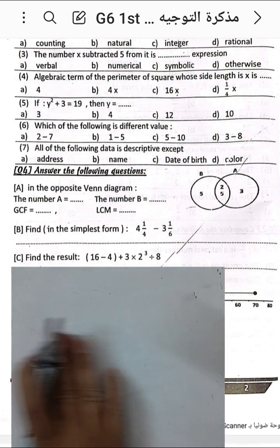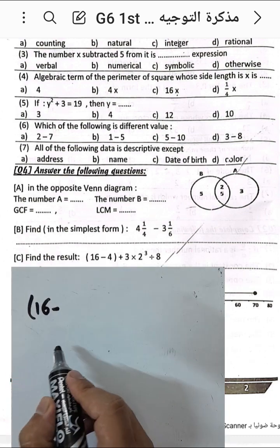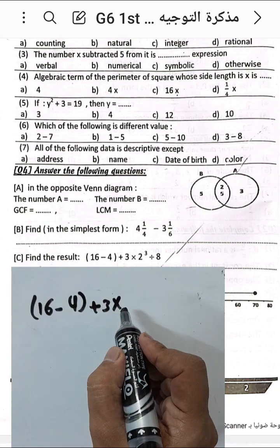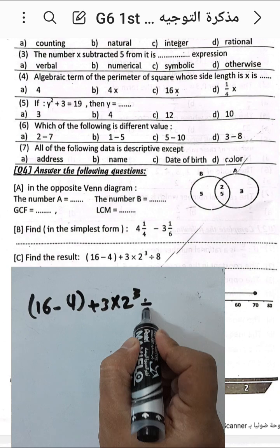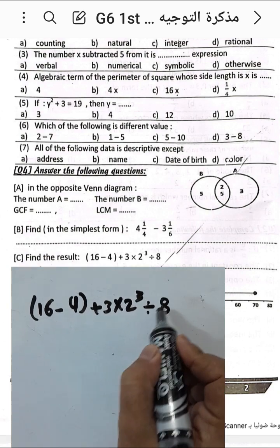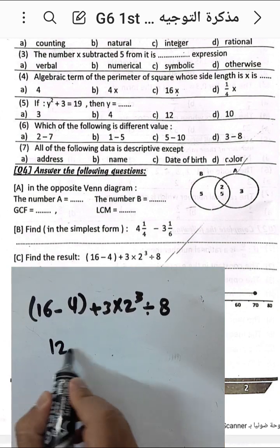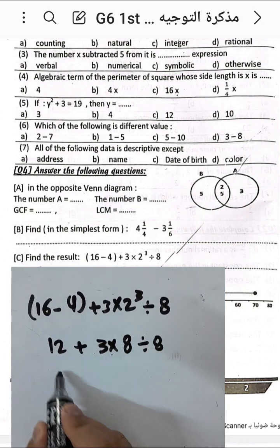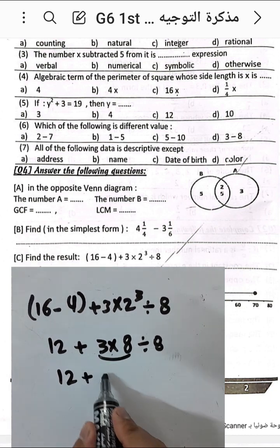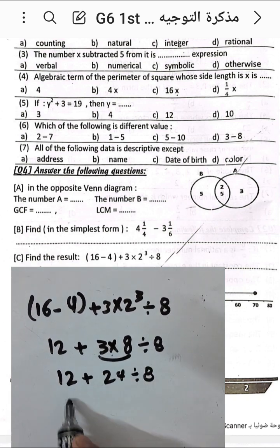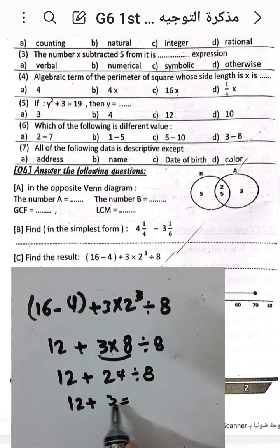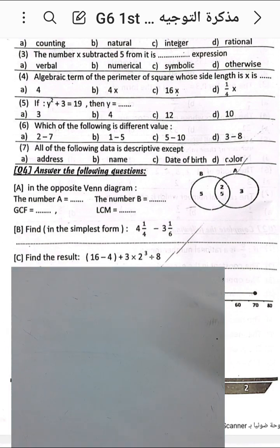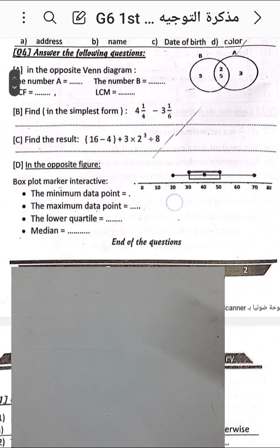Find the result using the order of operations: parentheses first, then multiplication and division, then addition and subtraction from left to right. We have 16 minus 4 equals 12, plus 3 times 2 to the power 3. Two to the power 3 is 8, so 3 times 8 equals 24. Then 24 divided by 8 equals 3, and 12 plus 3 equals 15.